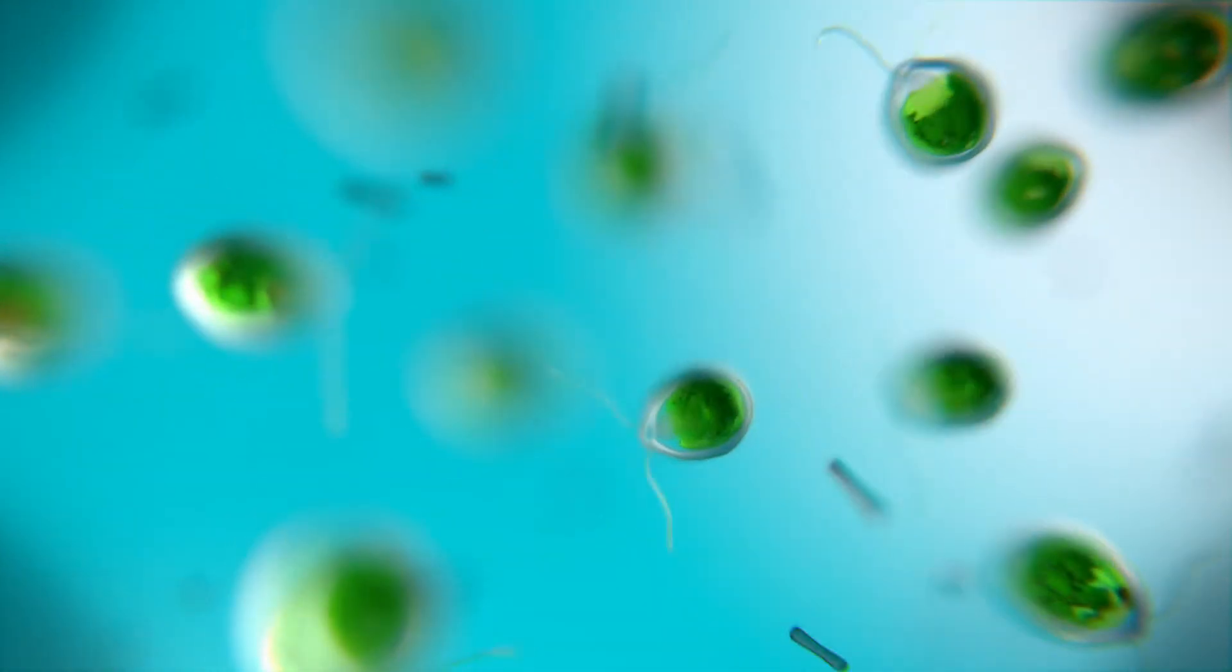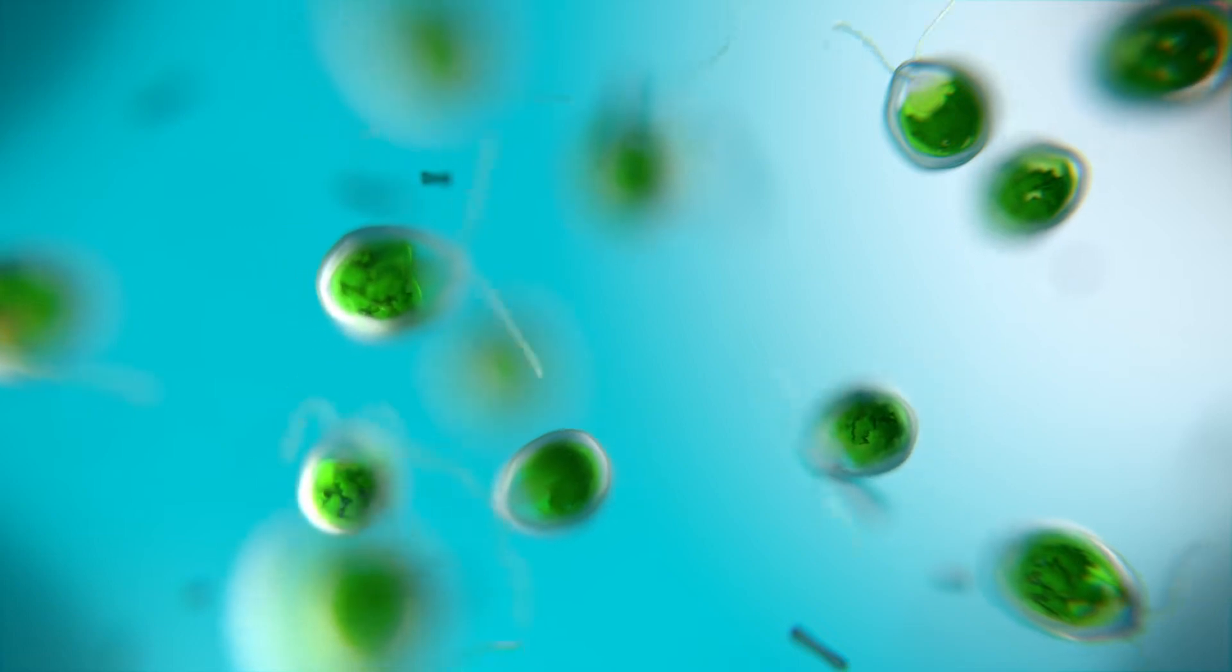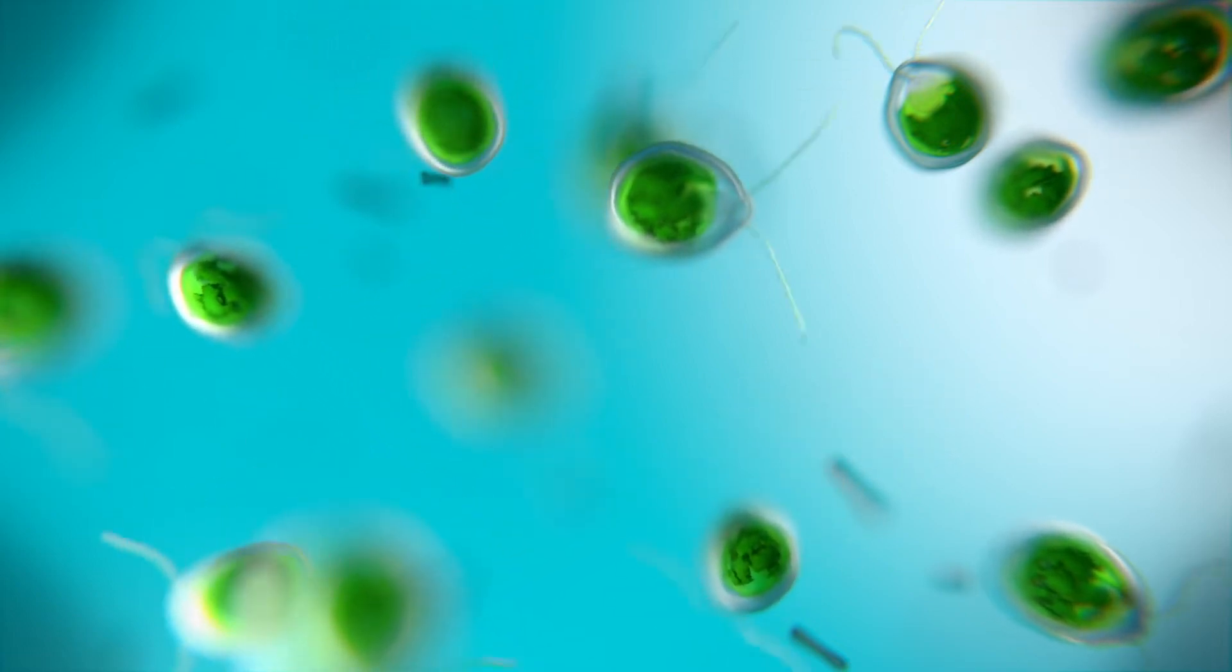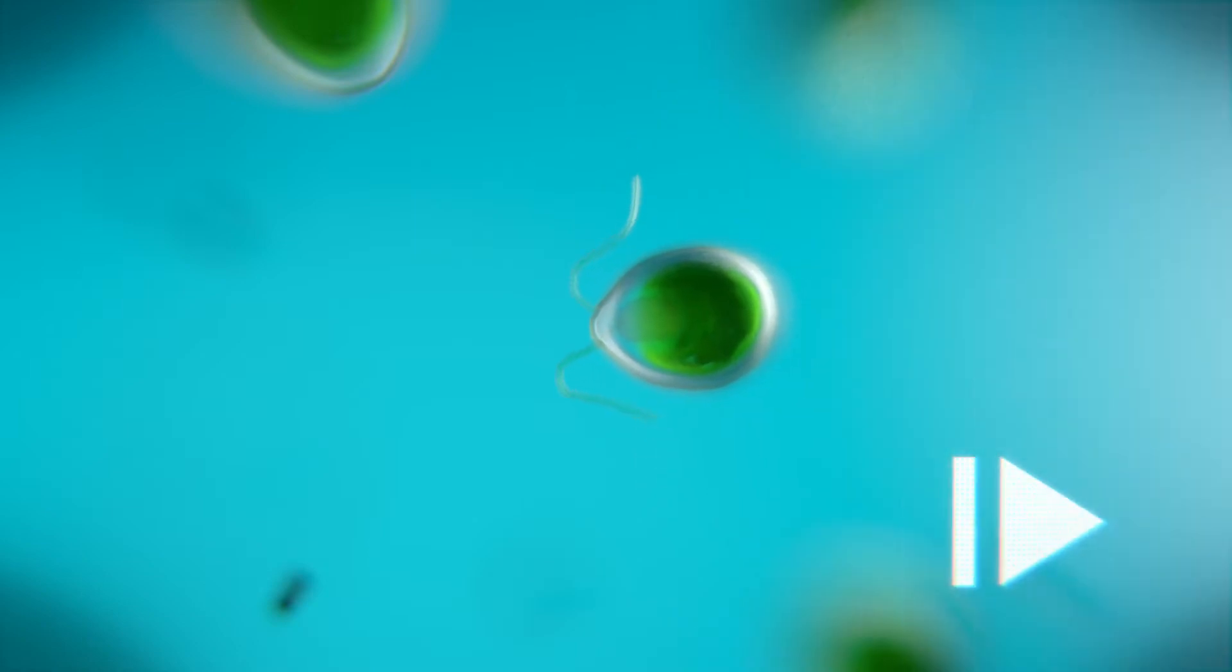These images show Chlamydomonas green algal cells as seen through a microscope. They pull themselves forward by using two flagella.